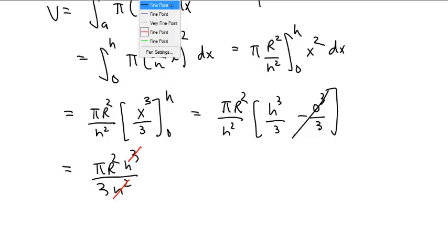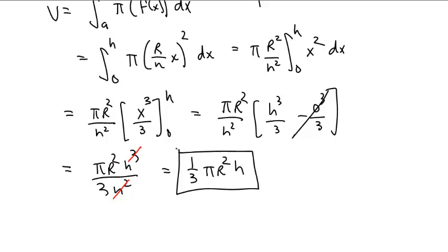And we are left with 1 third pi r squared h. Ta-da! And that is, in fact, the formula for the volume of a cone.